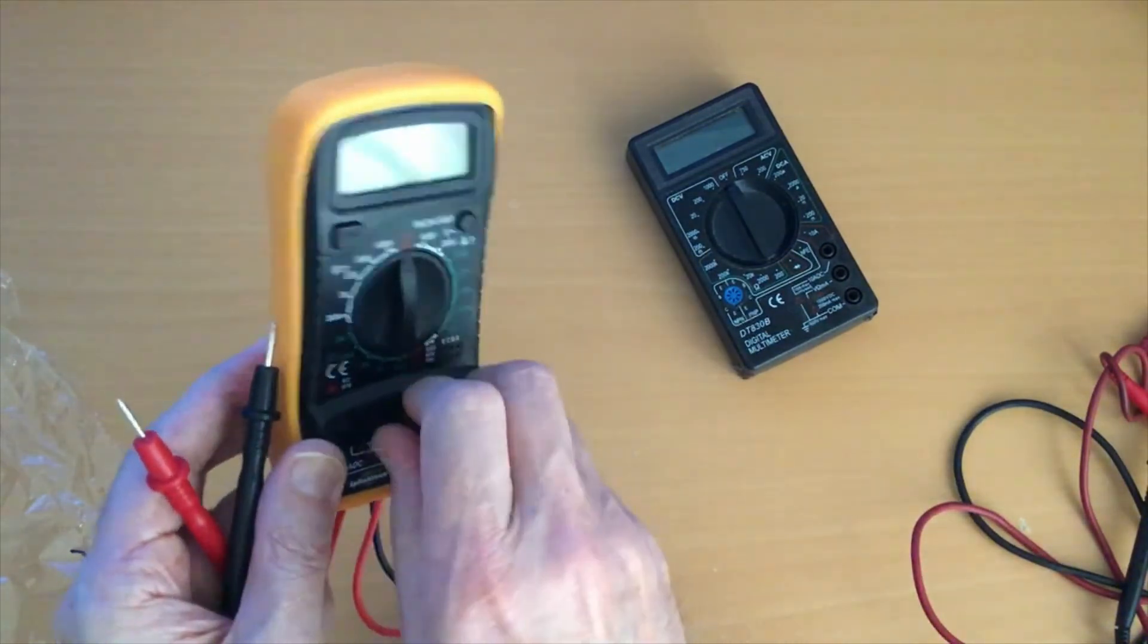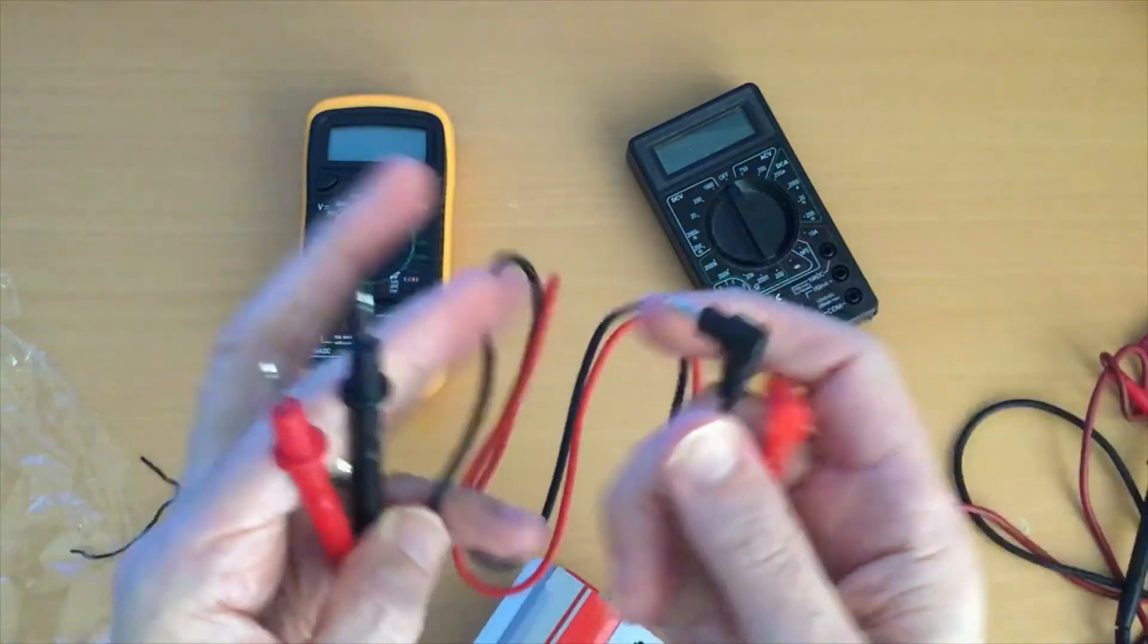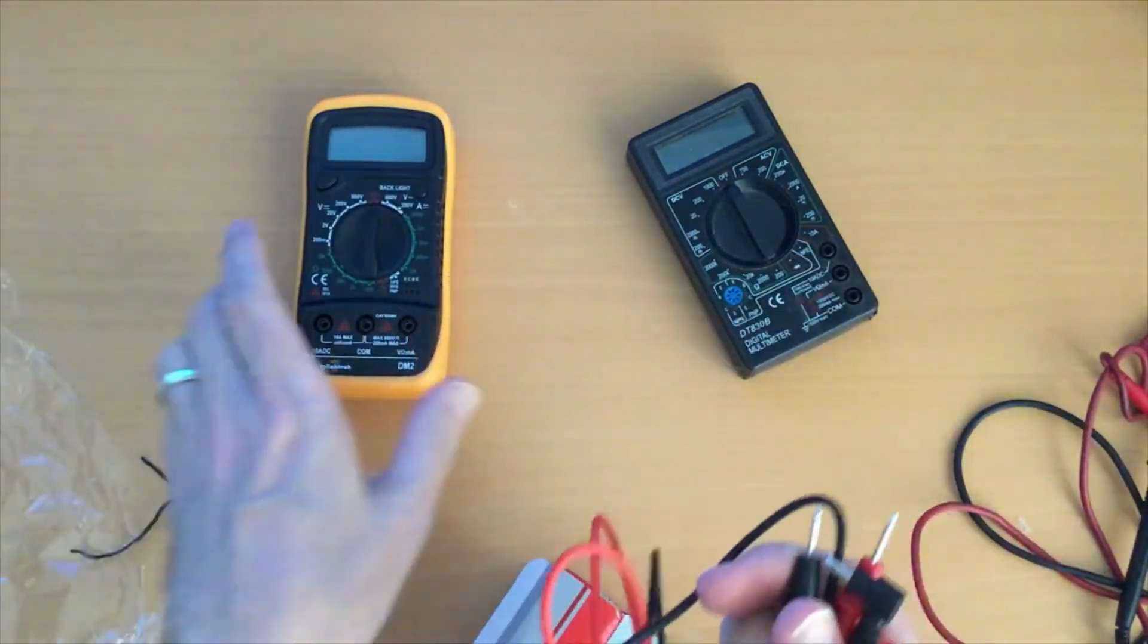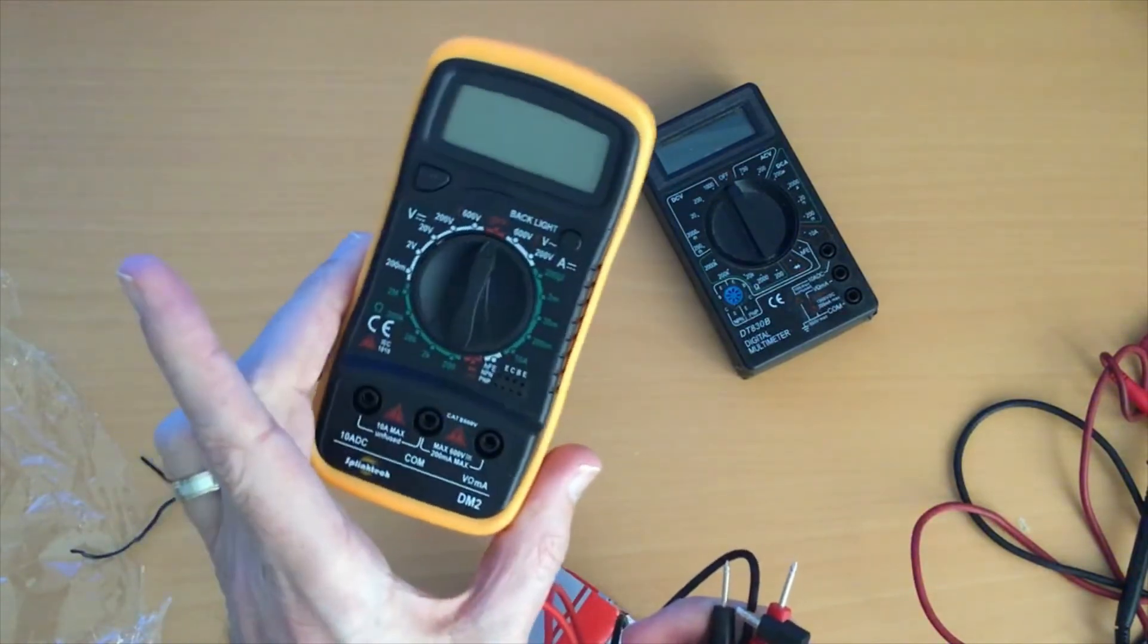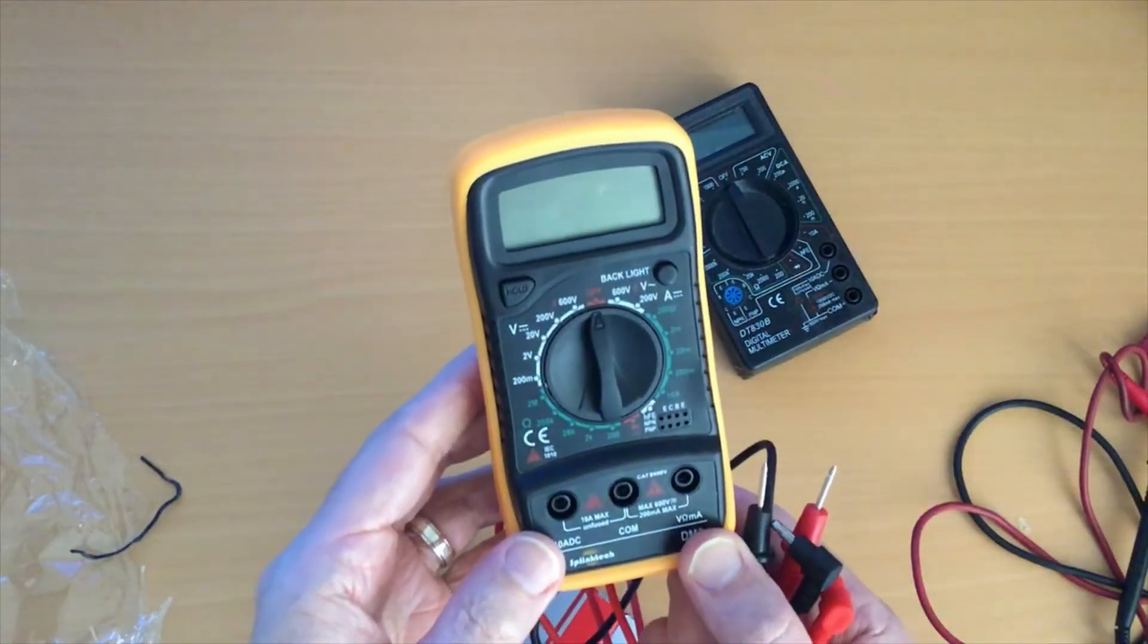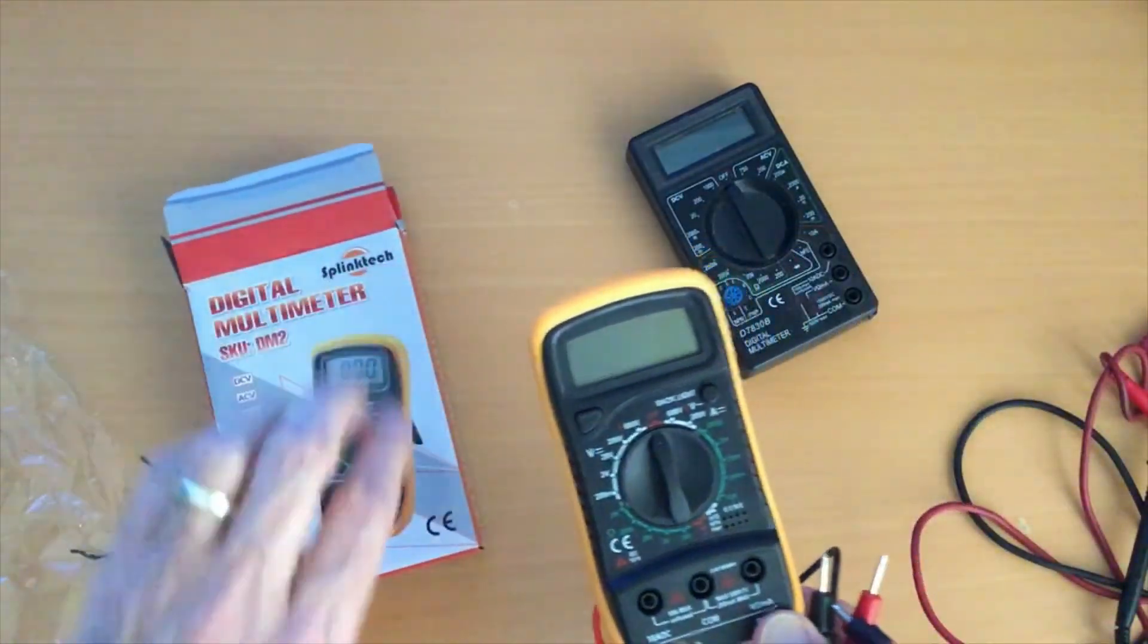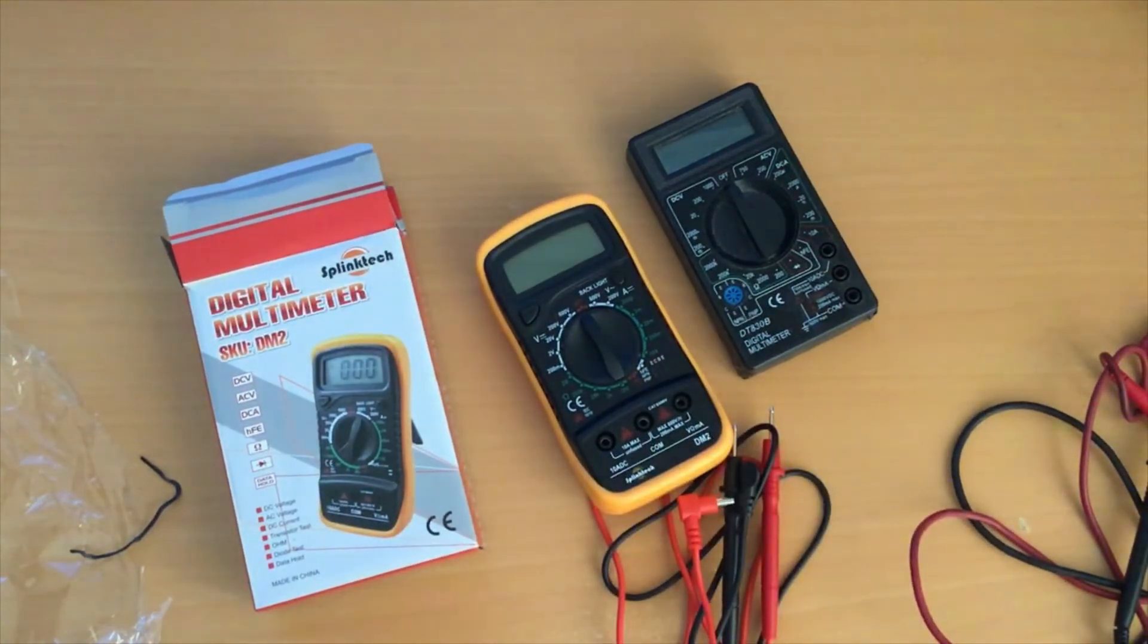So the set of leads on their own would have cost me 2.99, so really for five quid more I get a multimeter with the backlight and the continuity bleeper. So there it is guys, I hope that is of use to someone out there and look forward to seeing you in the next video. Bye for now.